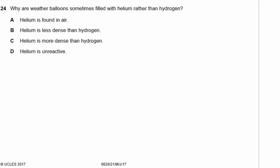Question 24. Why are weather balloons sometimes filled with helium rather than hydrogen? A — helium is found in air — not really significant. B — helium is less dense than hydrogen — no, it's actually more dense. C — helium is more dense than hydrogen — true, but that's not the reason. D — helium is unreactive — that is the reason. Helium is a noble gas, so it doesn't react with anything and won't explode if there's a spark. The answer is D.